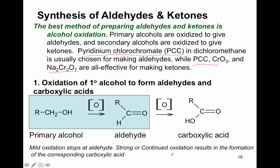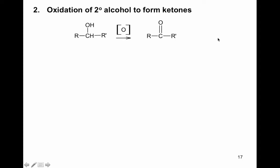The second oxidation reaction is the oxidation of a secondary alcohol to form ketones. We still use a single oxidation bracket above the arrow. The oxidizing agent could be strong or mild—it doesn't matter. Strong or weak, you still get just a ketone. The R groups on either side of the carbonyl carbon are the same as in the starting material and can be the same as each other or different.